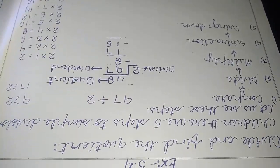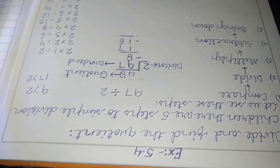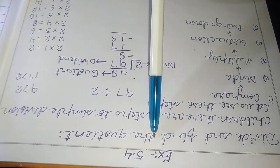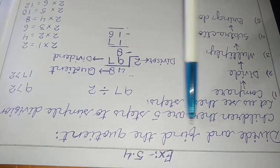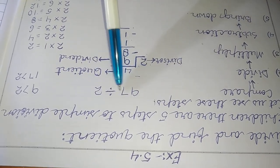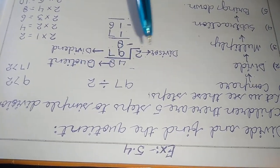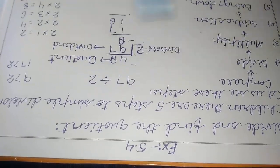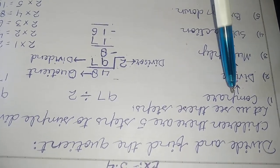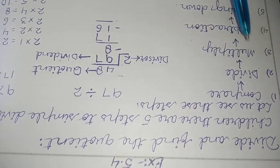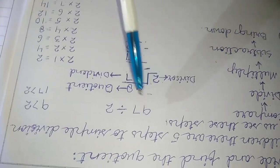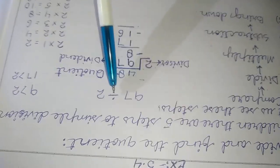Good morning children, hope you are all fine. Today we are going to continue unit 5, and that is division. Let us start exercise 5.4 — divide and find the quotient. There are five steps to simple division: first, compare; then divide; then multiply; then subtraction; and then bring down.